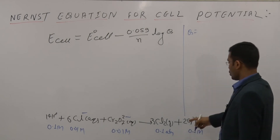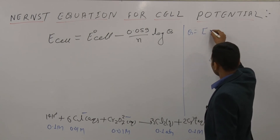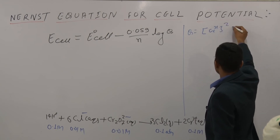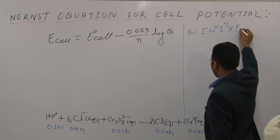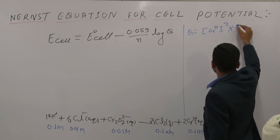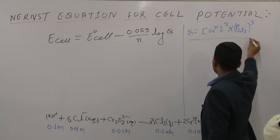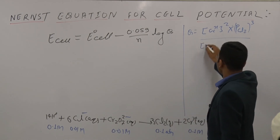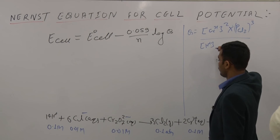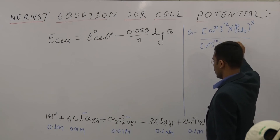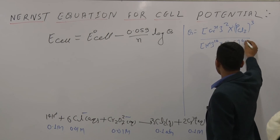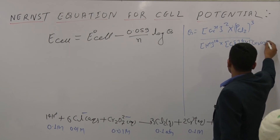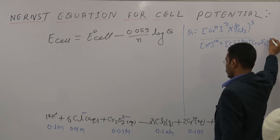Q is equal to [Cr³⁺]² × P(Cl₂)³ divided by [H⁺]¹⁴ × [Cl⁻]⁶ × [Cr₂O₇²⁻]¹.